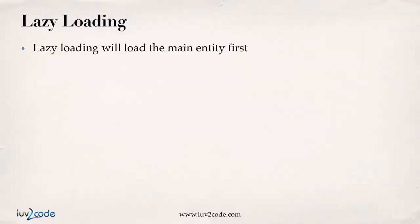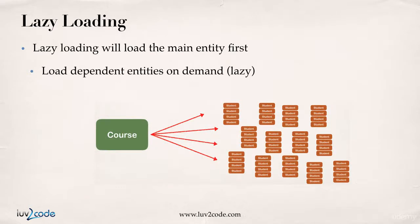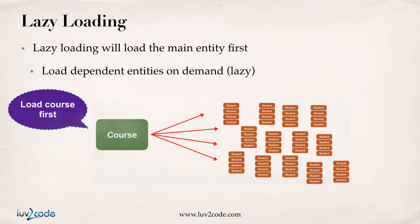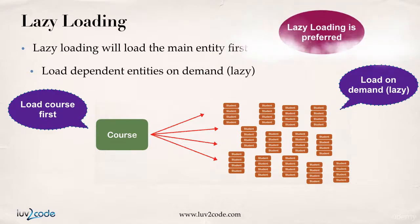With lazy loading, it will load the main entity first, and then it'll load the dependent entities on demand at a later time. So here we have a course — it'll load the course first, and then when you need a list of students, that's when it'll actually go to the database and load those students on demand. The preference here is on making use of lazy loading to make sure our application performs in a fast manner.